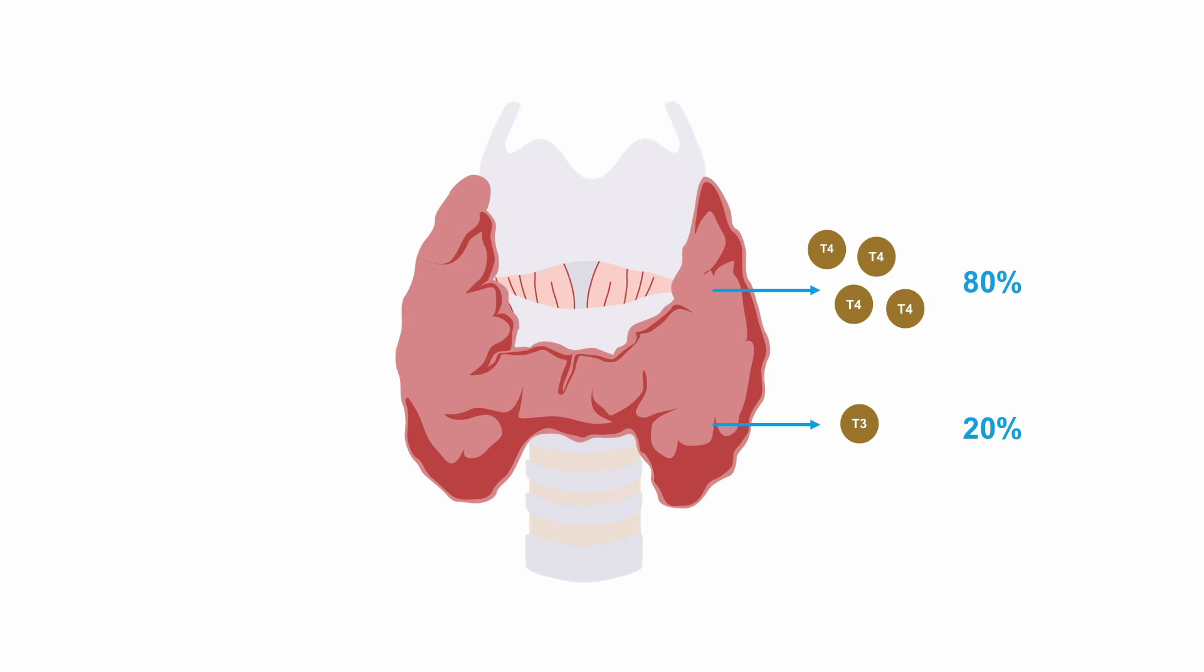Thyroid hormone is produced in two forms: T3, which is the active form of thyroid hormone, and T4, which is an inactive precursor to T3.